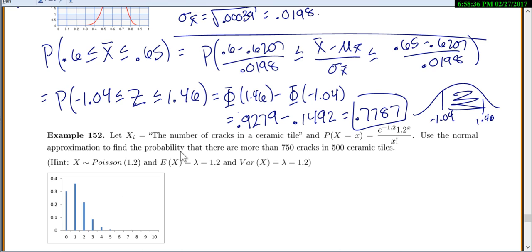X is our number of cracks in a ceramic tile. Here's the probability for each value. We want to use the normal distribution to find the probability there are more than 750 cracks in 500 ceramic tiles. When you look at this, this graph is just for one tile, and all of these numbers are for one tile.